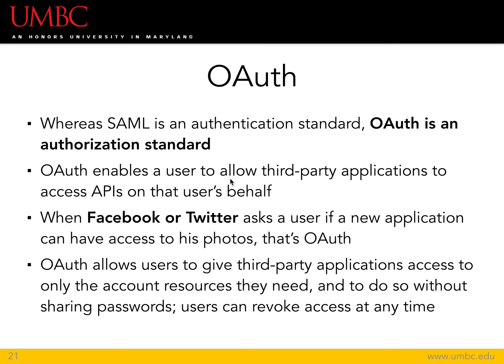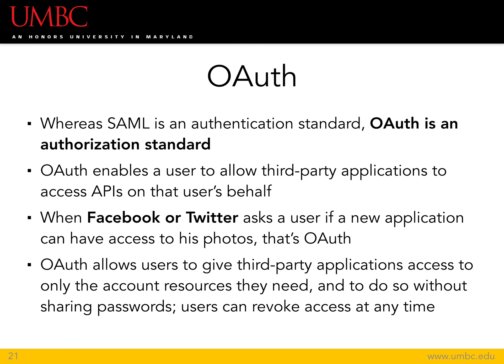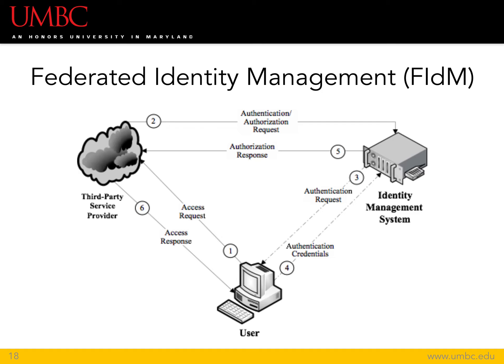You, the user, do not have to make a request every single time an OAuth-enabled third-party application needs access to information. When Facebook or Twitter asks a user if a new application can have access to the photos on their account, that's an OAuth request. Whatever third-party application needs access can get it whenever they need it using tokens — you don't have to mediate the process the way you would in SAML, where the user's browser is a critical mediating component. You can also revoke access, and most implementations provide a notification system so you can see what's been accessed and when.